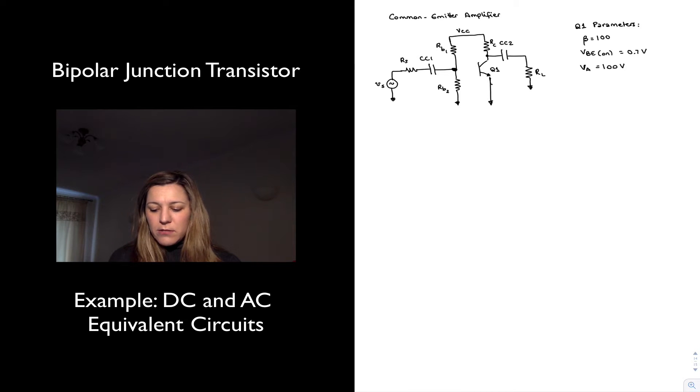And then you may recognize this structure as that of a common emitter amplifier from electronics one. If not, we're still going to be studying the single transistor amplifiers in later videos. So don't worry about it for now, just consider it a general transistor circuit with a single transistor. Notice that RB1 and RB2, they form that voltage divider biasing network that we studied previously.